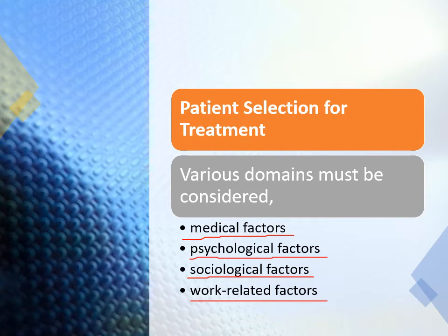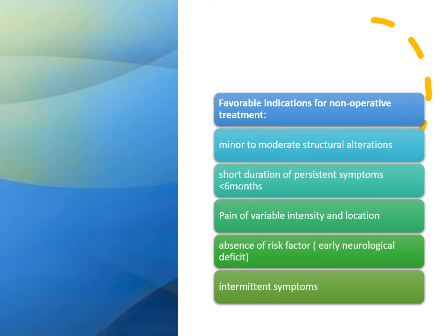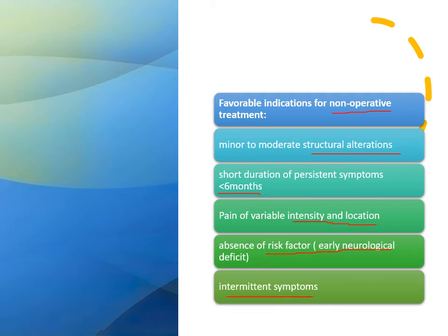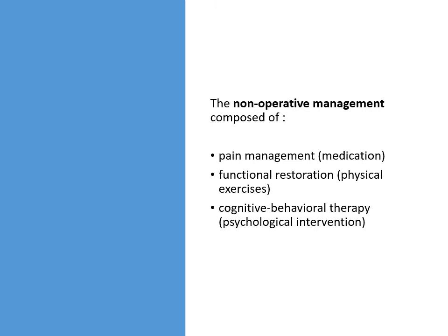Work-related factors also differ — whether treating a football player who wants to return to the game, or an elderly patient who only wants to reach the bathroom without assistance. In general, we favor non-operative treatment when structural deterioration is mild to moderate, pain duration is less than six months, pain intensity and location vary, there is no neurological deficit, and the patient's symptoms come and go. Non-operative treatment consists of analgesia, physical exercises, and psychological intervention.